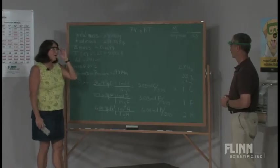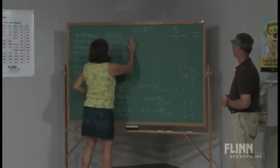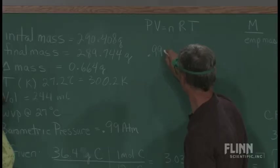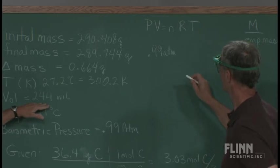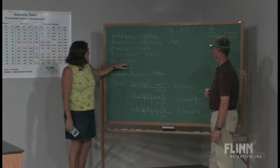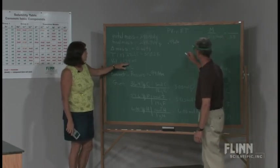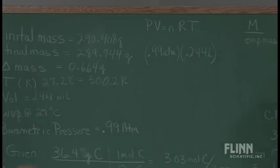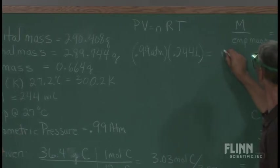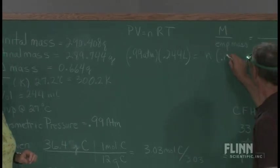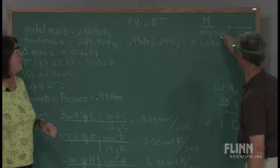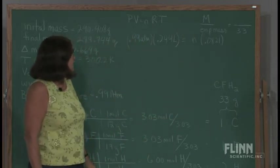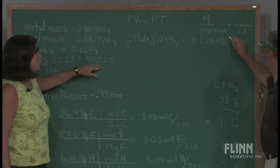Now, let's calculate, from our collected data, the molar mass. We're going to write in 0.99 atmospheres for our pressure. For our volume, I'm going to change this into liters, so we're going to put in 0.244 liters. I'm going to solve for N. R is going to be 0.0821 in units of atmosphere liters per mole Kelvin. And then our temperature must be in Kelvin, so we're going to put in 300.2 degrees Kelvin.